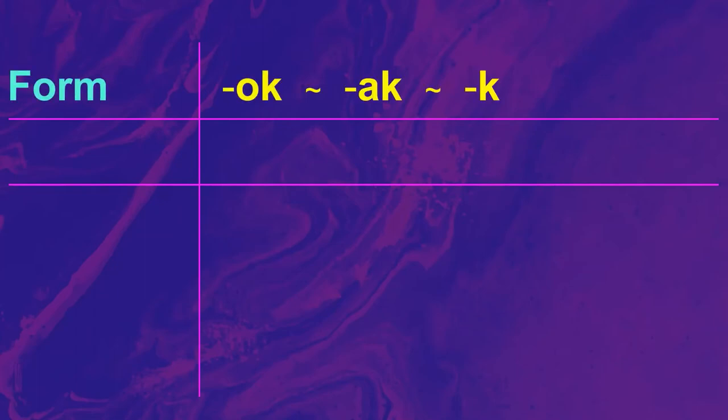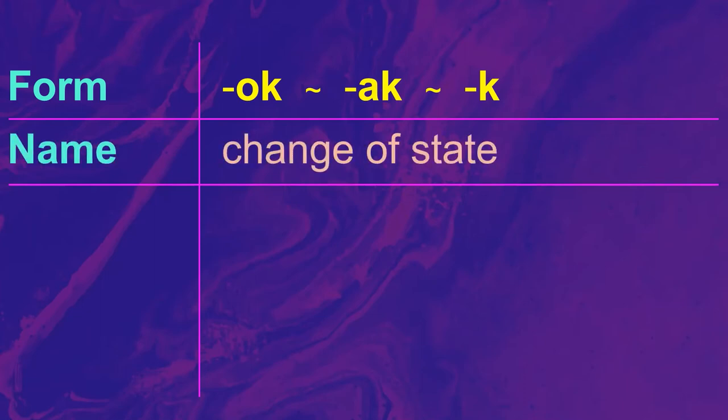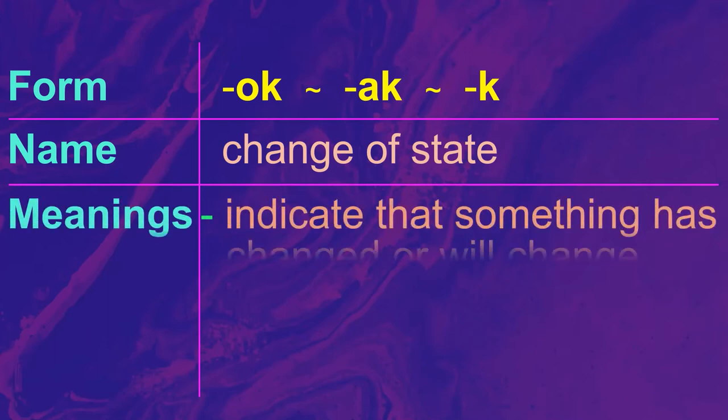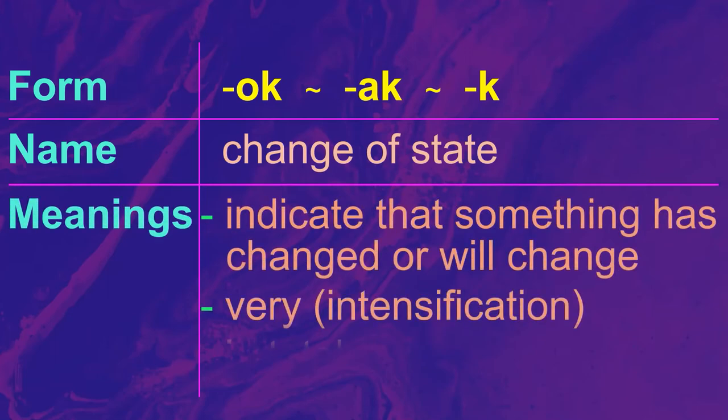So, in Atong, there is a meaningful part with three forms: O-K, A-K, and K. Its name is change of state, and its meanings are: to indicate that something has changed or will change; very, or intensification; and in total.